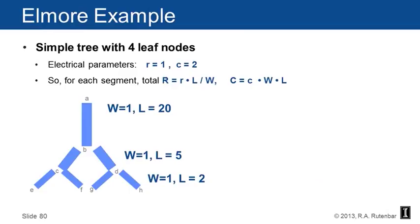Here's a very simple little tree circuit. The electrical parameters lowercase r is one, lowercase c is two. So the resistance is lowercase r times the length divided by the width. The capacitance is c times the width times the length. From node A to B, the width is one and the length is 20. From nodes B to C and B to D, the width is one and the length is five. From C to E, C to F, D to G, and D to H, those four segments, the width is one and the length is two.